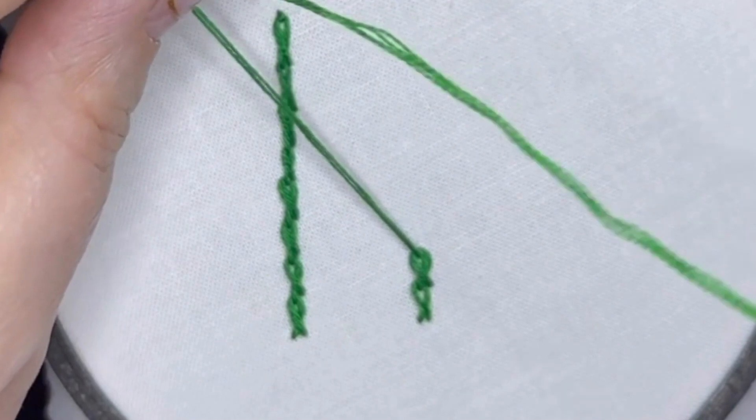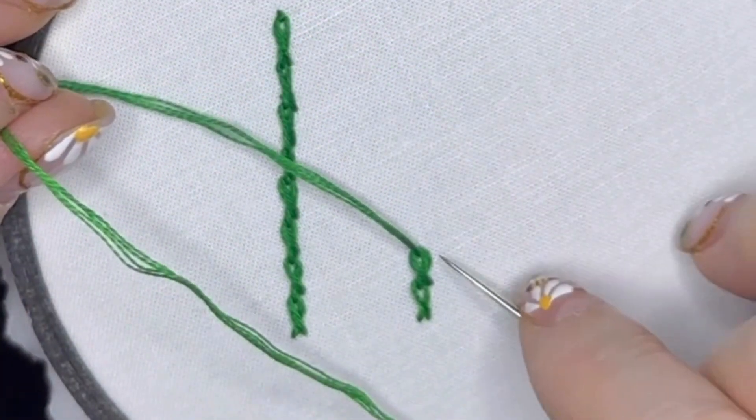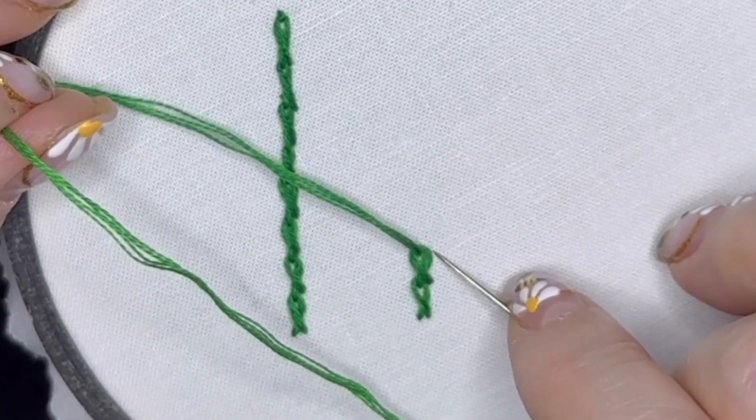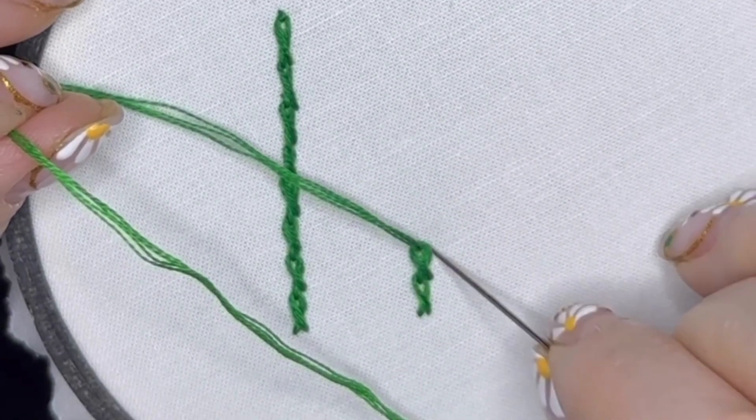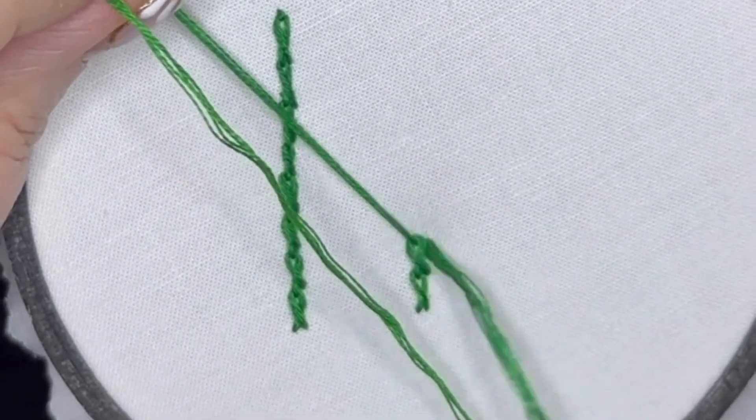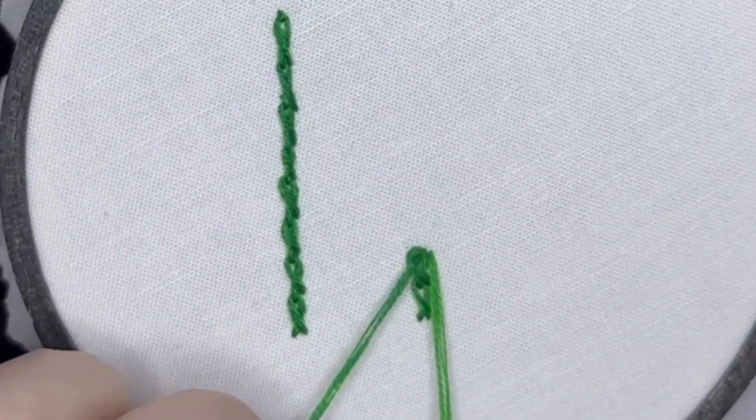Let's do that in slow motion. We're going to go down through the fabric level with and above—so level where we just came up and above where we came up before that.